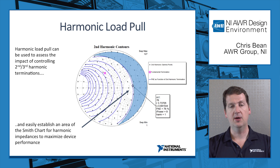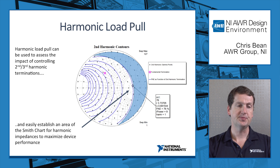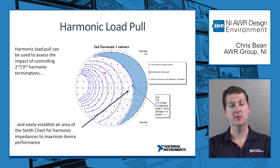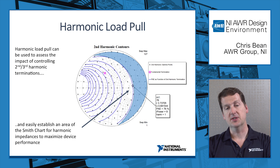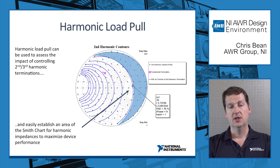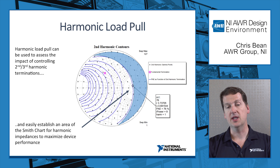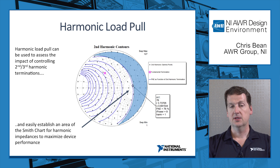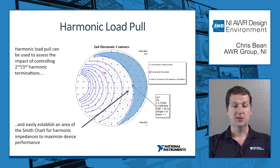So how does that fit in with load pull? Apart from doing just fundamental load pull, we can also load pull into harmonics and quickly assess the impact of controlling harmonic terminations. In this case, I've got a fixed fundamental termination on the load side, and we're pulling the harmonic essentially around the entire Smith chart. We can plot PAE contours, which show us the efficiency of the device based on its harmonic termination, and that lets you quickly identify an area of the Smith chart where you're maximizing your efficiency.